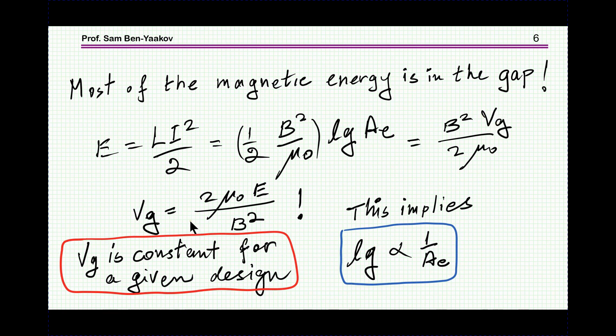This energy can be expressed as a function of the magnetic flux density and the volume of the gap. This means that the volume of the gap needed for a given design is constant because there are some considerations for choosing B—could be saturation, could be power loss.